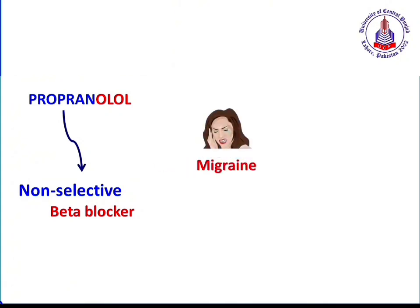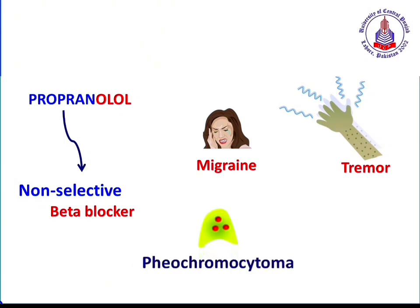Because of the non-selectivity of propranolol, it can be used in various clinical conditions. It can be used in the treatment of migraine prophylaxis, where severe headache may be associated with activation of the sympathetic system. It can also be used in the management of pathological tremor, and even in hypertrophic conditions where ventricular walls are thickened. In such conditions, propranolol can reduce cardiac work thereby increasing cardiac functionality. Propranolol can also be used in the prophylaxis of hyperthyroidism.